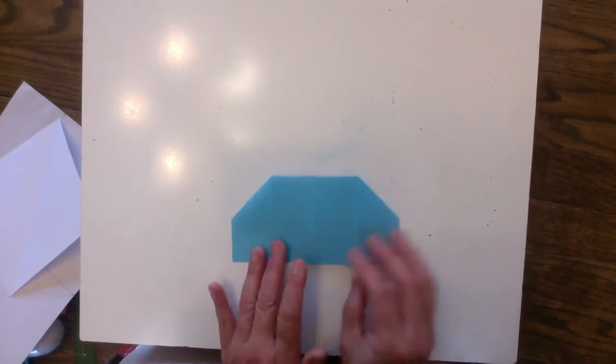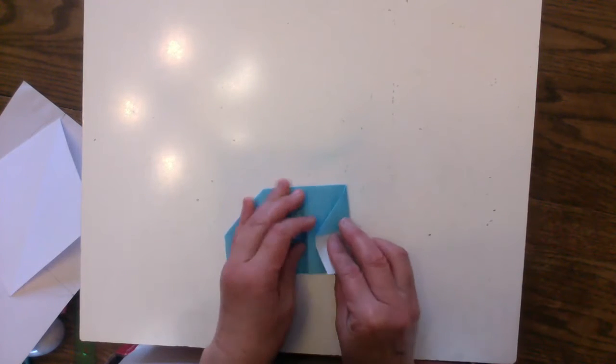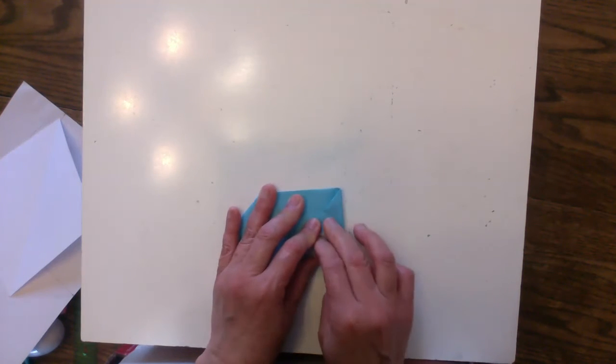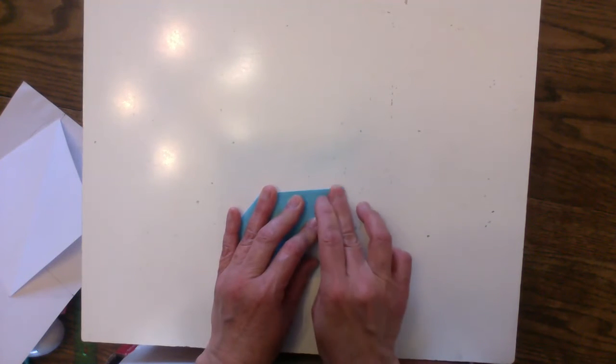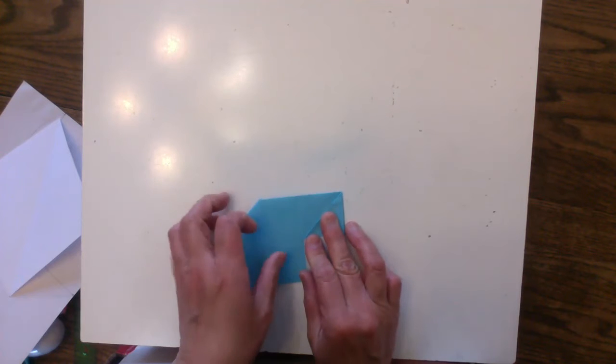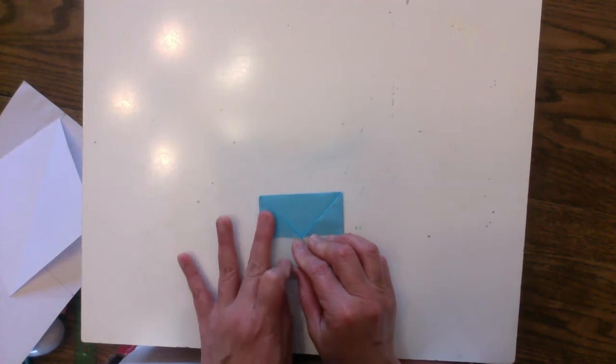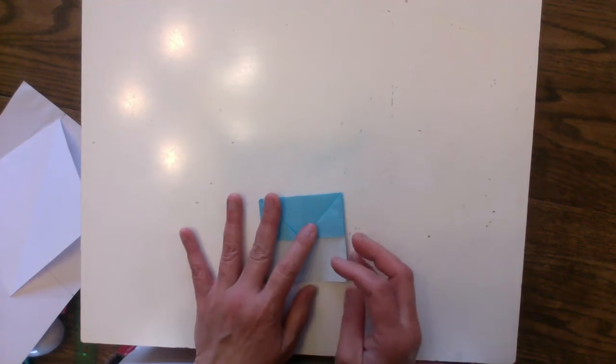And then turn this over and fold this towards the center line. And do the same thing on the left side.